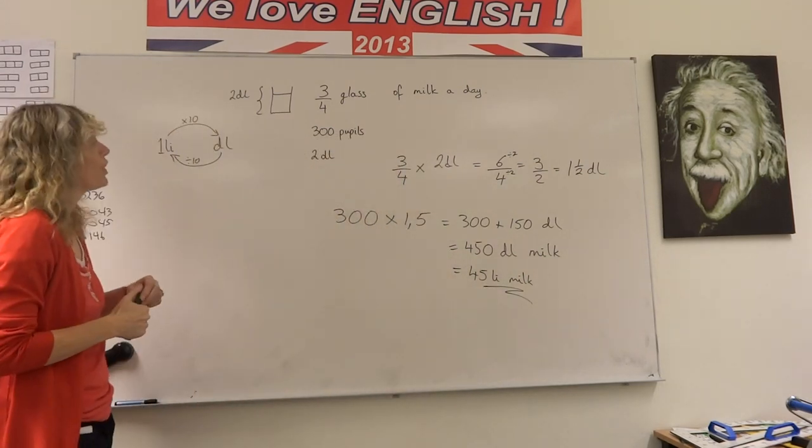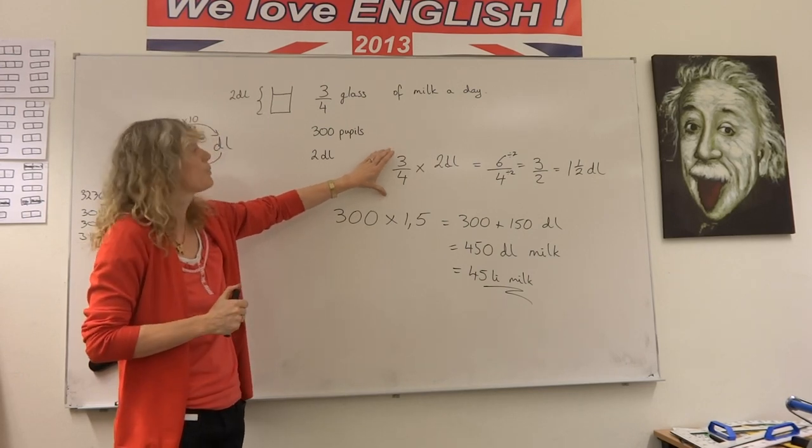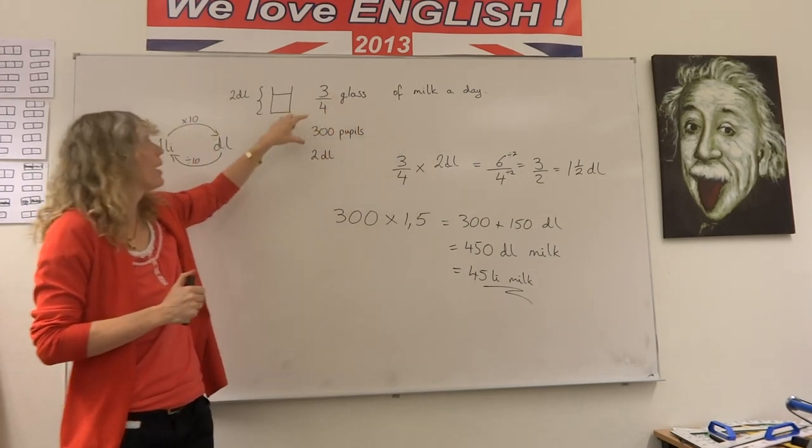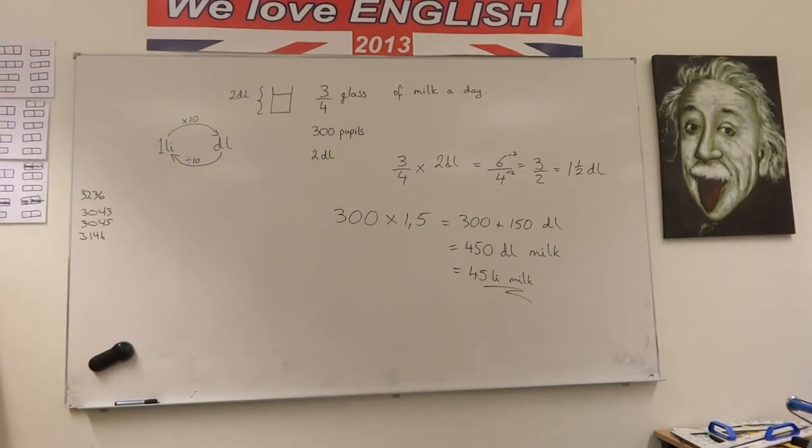So first work out how much the child is drinking in one glass, and then multiply the amount that they're drinking by the number of pupils you have. You have how much they drink in total, and then convert the units.